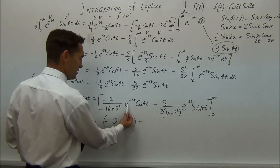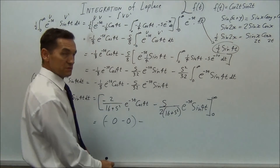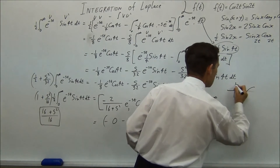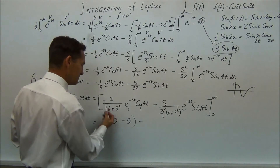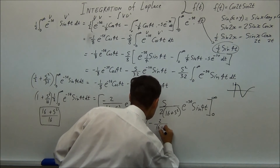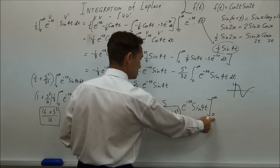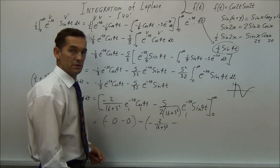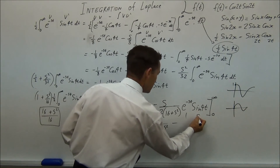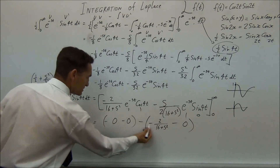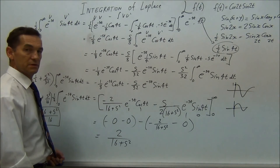Substituting t = 0: e to the zero is one, cos zero is one — looking at the cos curve, cos zero equals one — so the first term gives minus 2/(16 + s²). Then substituting t = 0 into the sine term: e to the zero is one, and sine zero is zero — looking at the sine curve, sin 0 = 0 — so that whole term is nothing. The answer is minus of minus 2/(16 + s²), which equals positive 2/(16 + s²). And you're done.